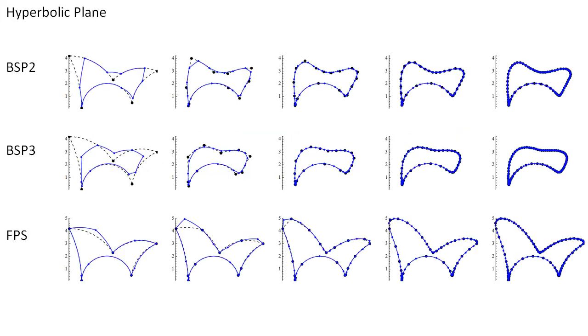Geodesics in the hyperbolic plane are semicircles and vertical lines. Especially the curves generated by the four-point scheme closely trace these arcs, which can be seen in the illustration in the bottom row.